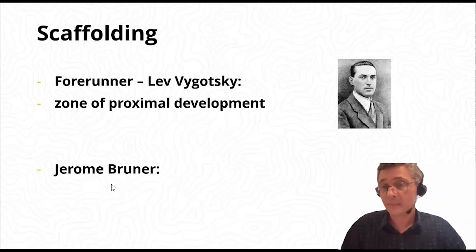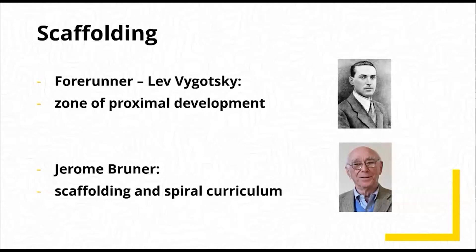Next, Jerome Bruner. Bruner's work in the 60s and 70s tells us that learners are capable of learning pretty much anything as long as the instruction is structured correctly and students are supported in the right way. This is the idea of scaffolding. Bruner also proposed the spiral curriculum, which means revisiting content at regular intervals so that students can revise, learn and master it. Each time the content is revisited, it is taught at a slightly higher level, so students are supported.